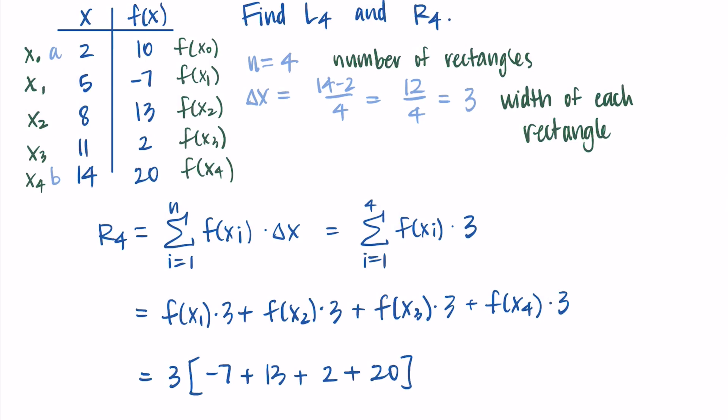So you do the 3, that's the Δx, times the output values using the right endpoints. So I'm starting at the output for x sub 1, that's f(x_1), which is negative 7, then 13, 2, and 20. When I add this up, I get 3 times 28, which is 84. And so that's the value of my right Riemann sum.